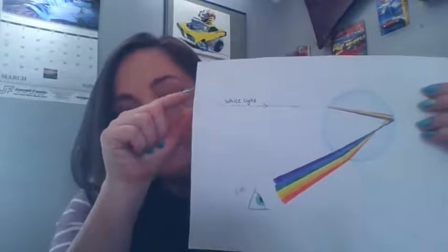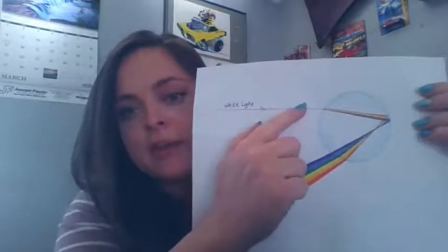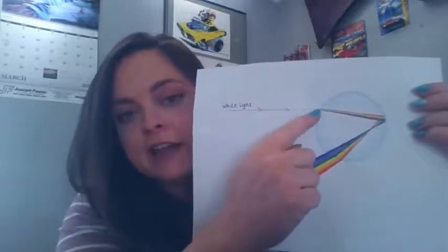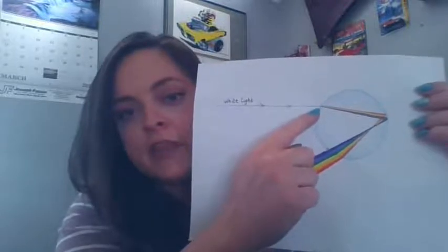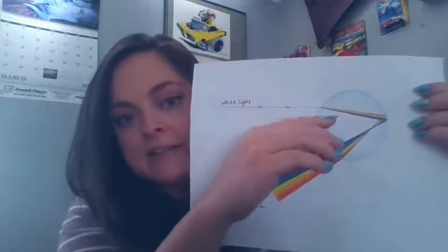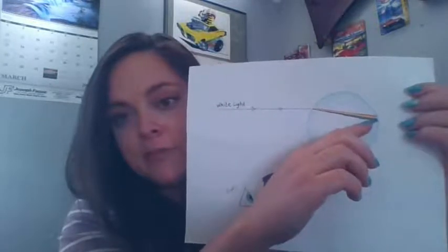As sunlight or white light shown here enters the droplet, it's first refracted at this surface of the water. That refraction bends the light in this direction toward the back of the droplet.